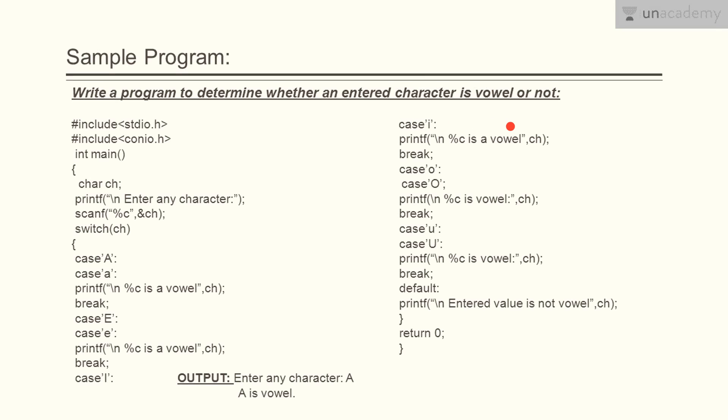Simply vowel means a e i o u in English language. Let's start it. We have defined here the character data type having name ch. Then printf as an output which tells the programmer enter any character.